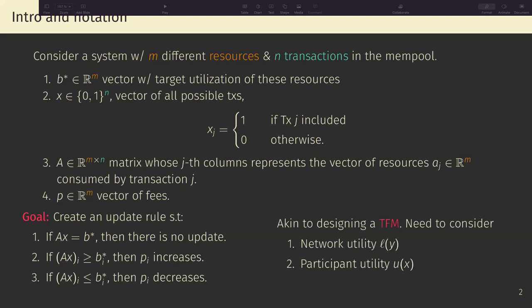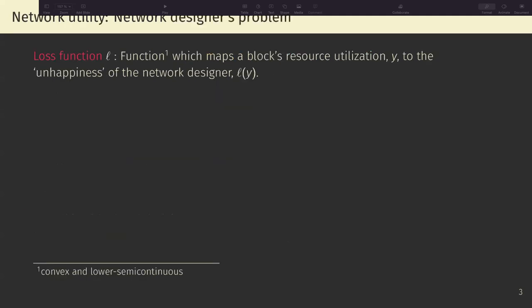Now, achieving this goal is akin to the Sion-Arrow-Strömbin mechanism, for which we need to consider the network utility and the participant utility. The network utility, we're calling L of Y. It depends on the resources used, and the participant utility depends on X, so on the transactions I'm going to include.